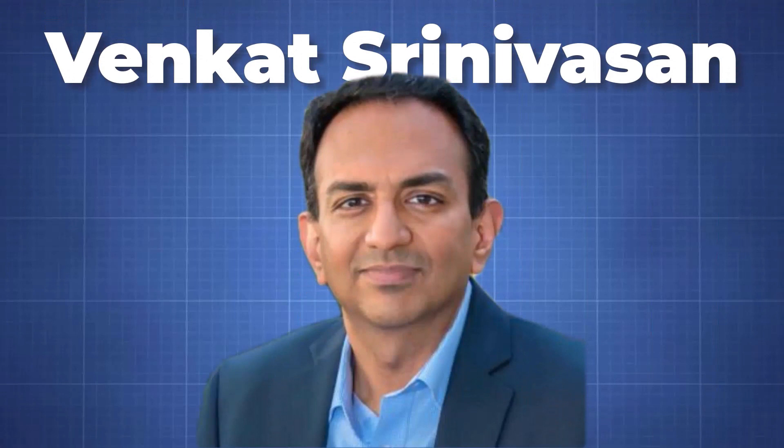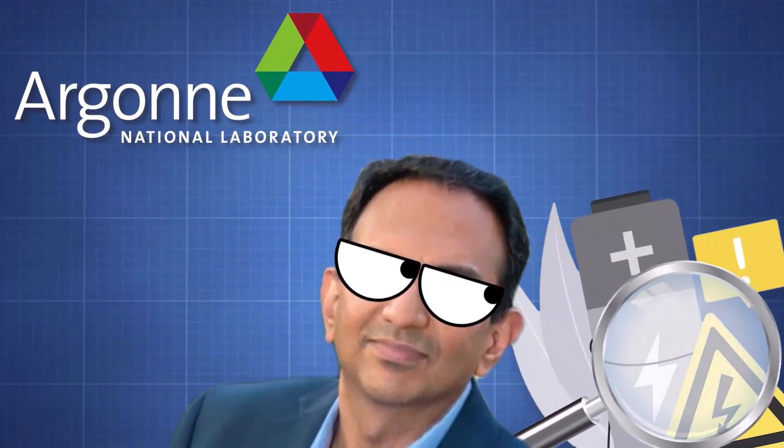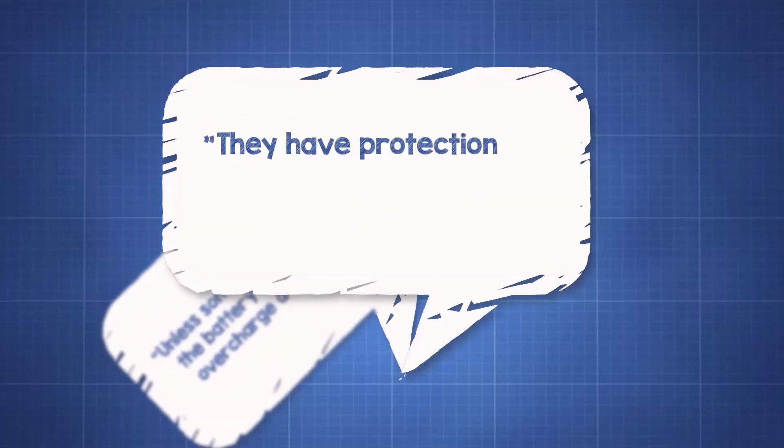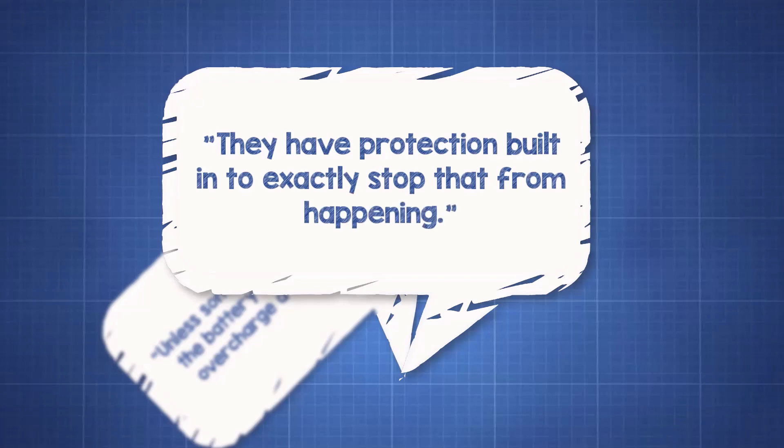Venkat Srinivasan, a battery researcher at the Argonne National Laboratory, puts it this way: Unless something goes wrong with the battery circuitry, you can't overcharge a modern phone. They have protection built in to exactly stop that from happening.